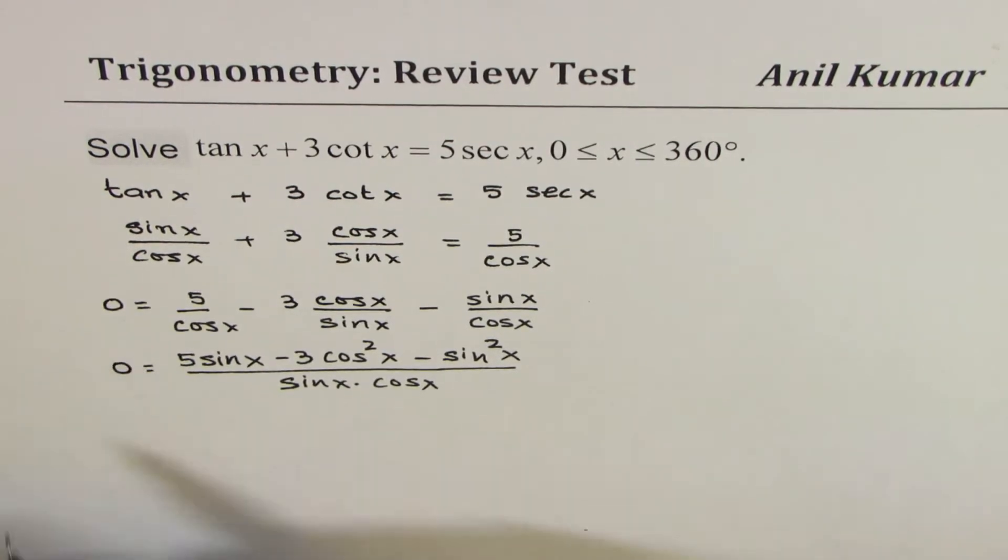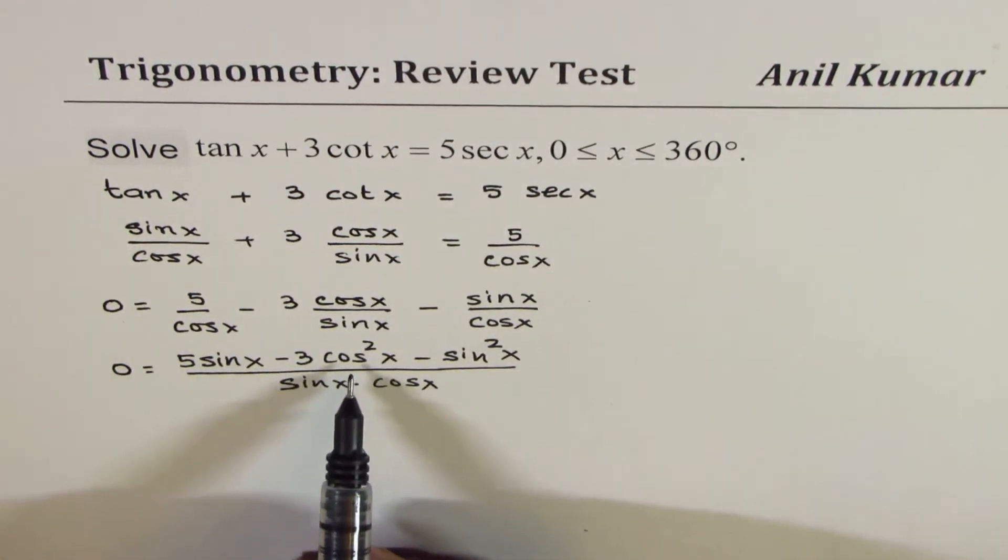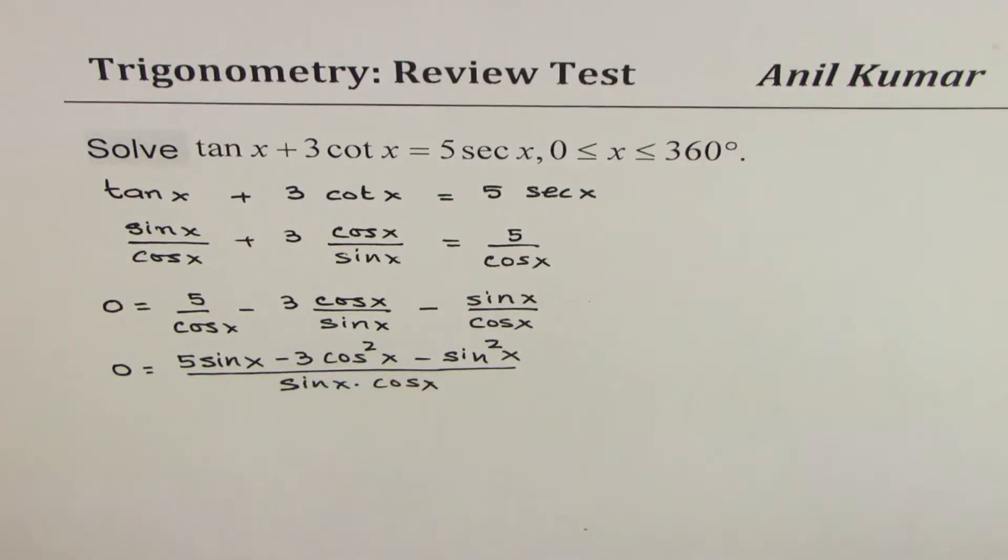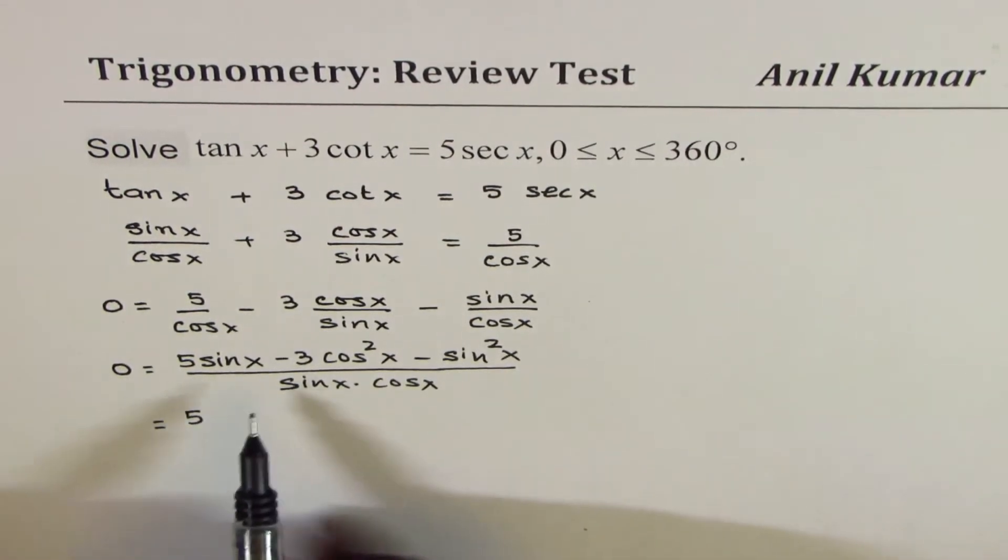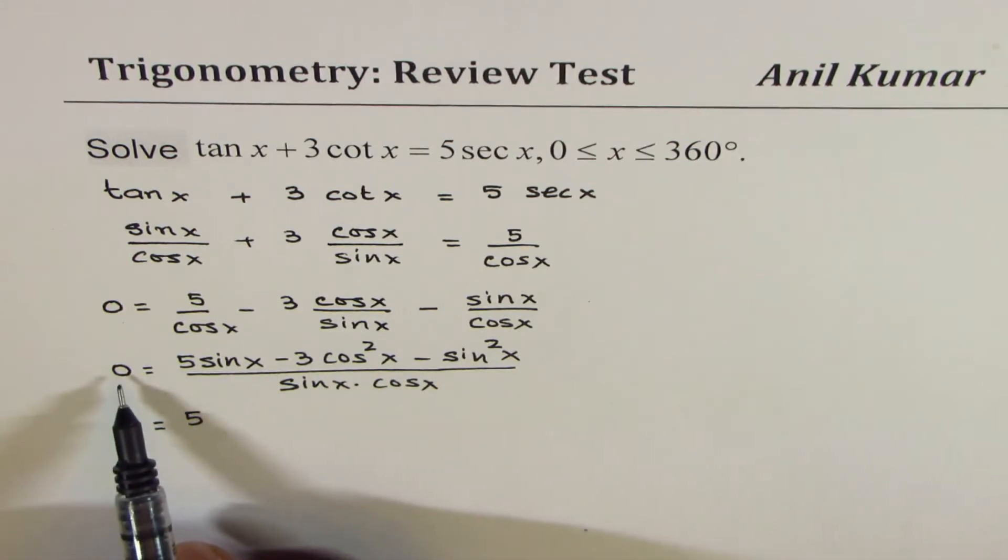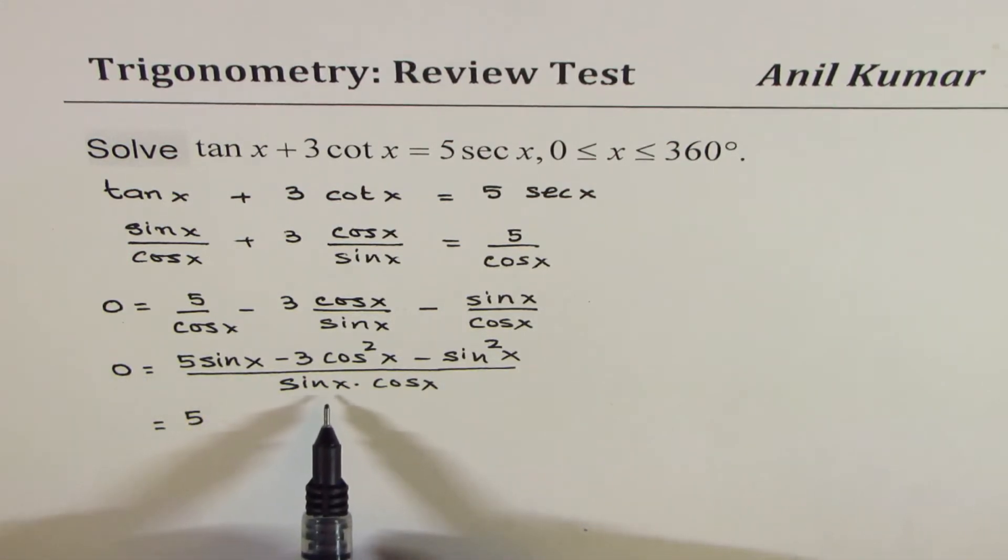Equals to 0. If I convert cosine as 1 minus sine square x, so what I'll do in the next step is, I can write this as, remember one more thing, that we need the numerator to be 0, denominator can never be 0, so we do have a restriction from here.